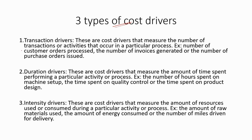There are three types of cost drivers. Transaction drivers measure the number of transactions or activities that occur in a process — for example, the number of customer orders processed, invoices generated, or purchase orders issued. Duration drivers measure the amount of time spent performing a particular activity — for example, hours spent on machine setup, time spent on quality control, or time spent on product design. Intensity drivers measure the amount of resources used during a particular activity — for example, the amount of raw materials used, energy consumed, or miles driven for delivery.